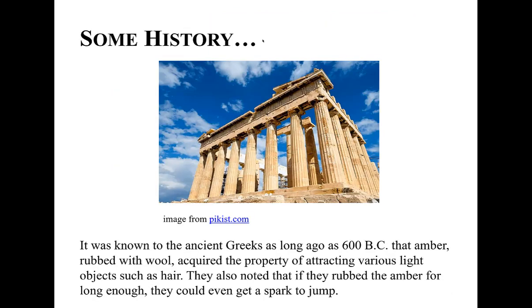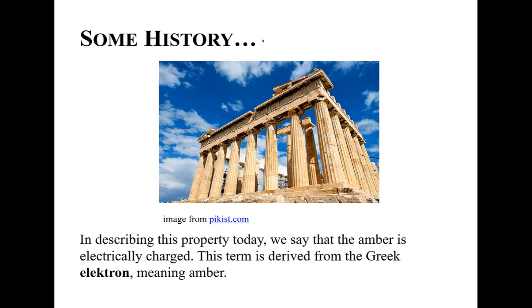So we first became aware of these electric forces about 2,400 to 2,600 years ago. It was known to the ancient Greeks as long ago as 600 BC that amber, rubbed with wool, acquired the property of attracting various light objects such as hair. They also noted that if they rubbed the amber for long enough, they could even get a spark to jump. In describing this property today, we say that amber is electrically charged. This term is derived from the Greek electron, meaning amber.